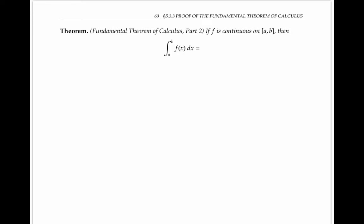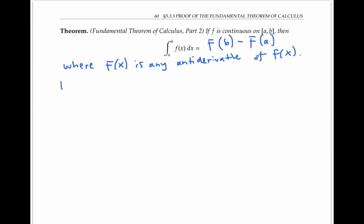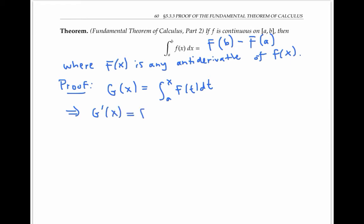The second part of the fundamental theorem of calculus says that if f is continuous, then the integral from a to b of f of x dx is equal to the antiderivative of lowercase f — which I'll denote by capital F — evaluated at b minus that antiderivative evaluated at a. Part two of the fundamental theorem follows directly from part one. Let's let g of x be defined as the integral from a to x of f of t dt. Then part one tells us that g prime of x exists and equals lowercase f of x. In other words, capital G is an antiderivative for lowercase f.